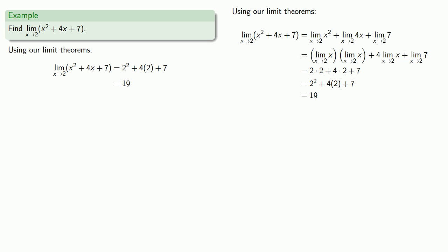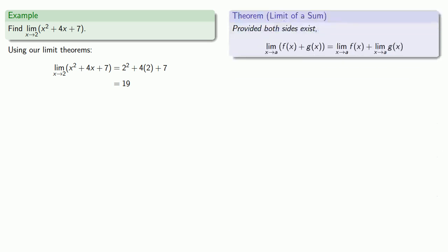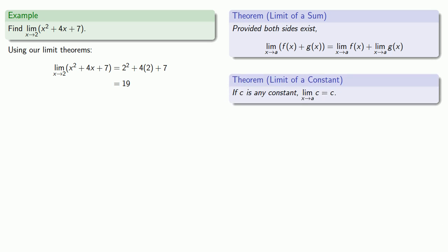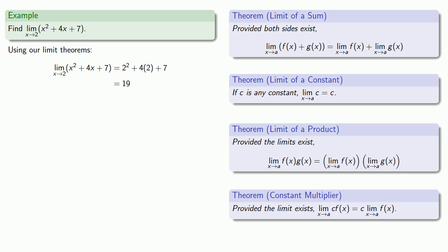We'll evaluate our expression to get a limit of 19. While the actual value of the limit is 19, if we look closely at how we calculated it, we might see that we found 2 squared plus 4 times 2 plus 7 — exactly the same thing we would have done if we just evaluated the polynomial x squared plus 4x plus 7. Since a polynomial is a sum of terms that might include constants or products of variables multiplied by constant terms, this suggests the following theorem.